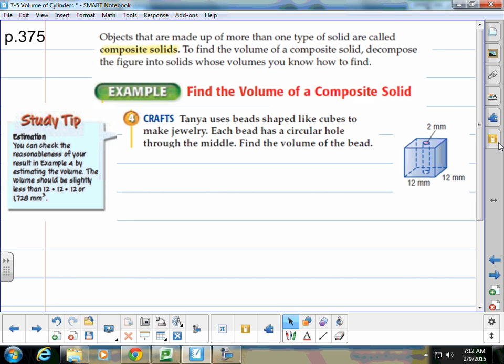Composite solids. So this is kind of a combination of our composite figures. This is where you're going to have objects that are made up of more than one type of solid. So you just decompose a figure into solids whose volumes you do know how to find. And then you'll add them up together or subtract, depending on what it's looking for. So for number 4 here, Tanya uses beads shaped like cubes to make jewelry. Each bead has a circular hole through the middle. Find the volume of each bead.